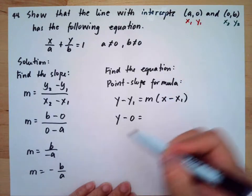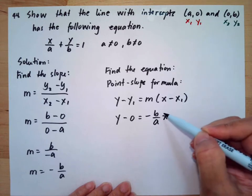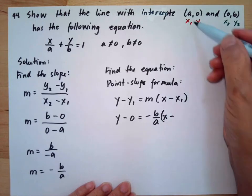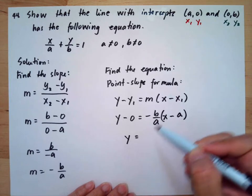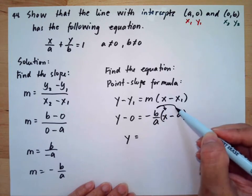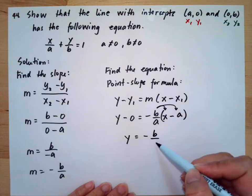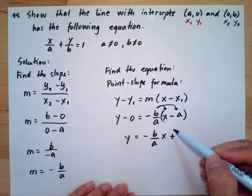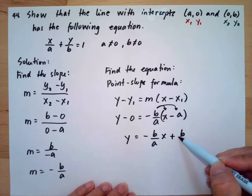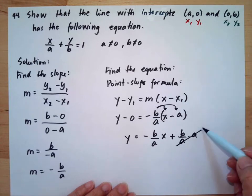Our y₁ is 0, our slope is -b/a, and x minus our x₁ is a. Then we simplify by distributing our slope -b/a, so this will be -b/a times x, and this will be positive b.